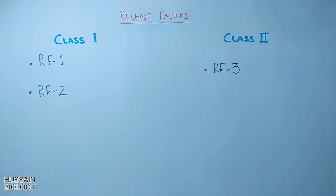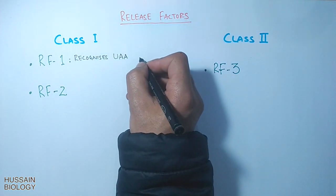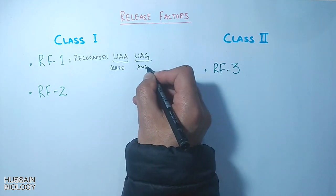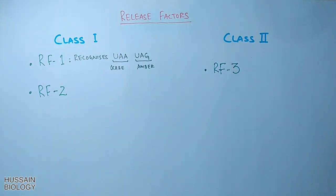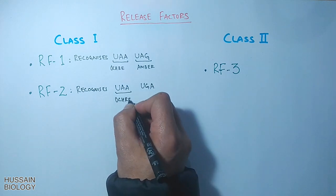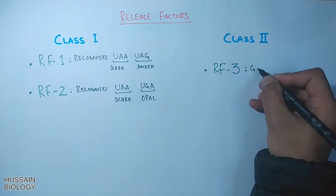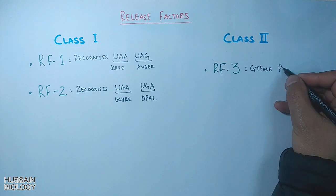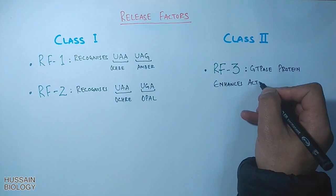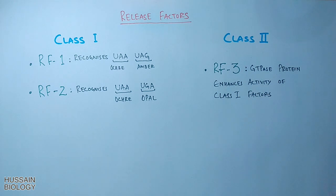Release factor 1 recognizes two stop codons: UAA and UAG. Release factor 2 also recognizes two stop codons: UAA and UGA. From class 2, release factor 3 is a GTPase protein that enhances the activity of class 1 release factors. This concludes the components of prokaryotic translation.